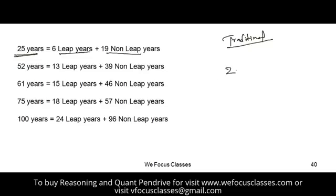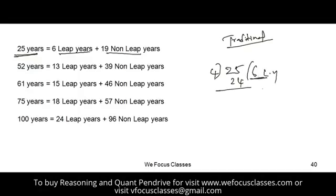How do you calculate this? Divide 25 by 4 — that gives 6, since 4 times 6 is 24. These are the leap years. Out of 25, if 6 years are leap years, the remaining 19 will be non-leap years.